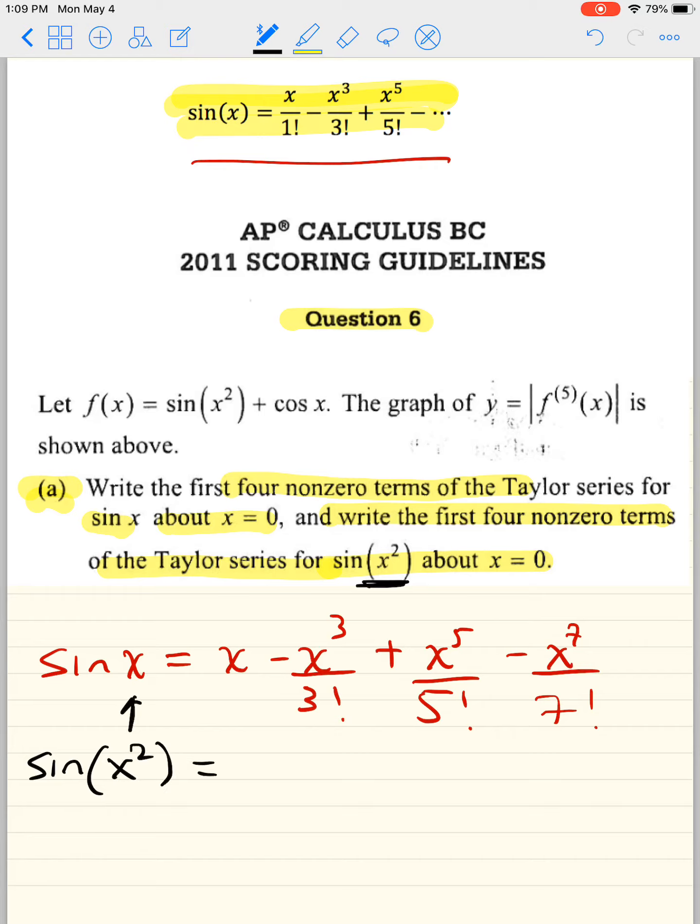So every time I see an x, I'm going to substitute x squared. So x squared goes in there, x squared to the third over 3 factorial plus x squared to the fifth over 5 factorial.